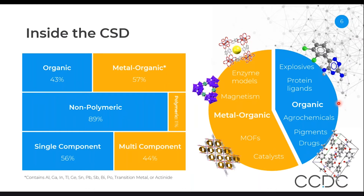And the other half of the database can include things as diverse as explosives, protein ligands, agrochemicals, pigments, drugs, and drug-like molecules. The database is predominantly non-polymeric, although we've been seeing a rise in the number of polymeric structures over recent years.